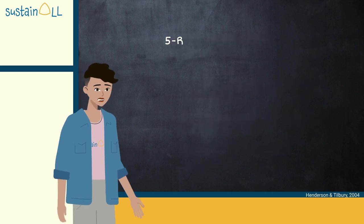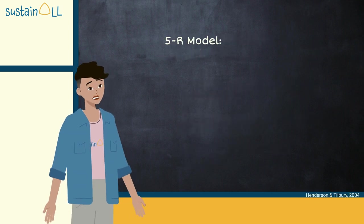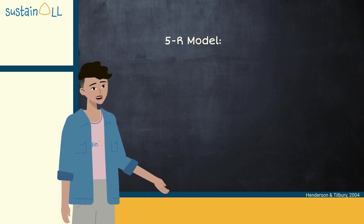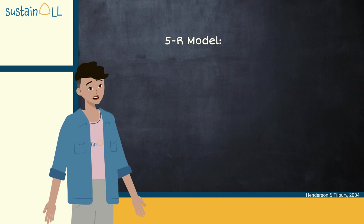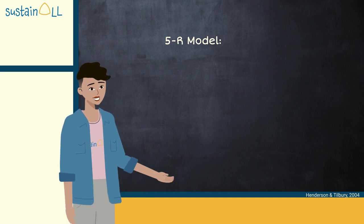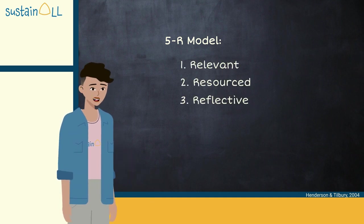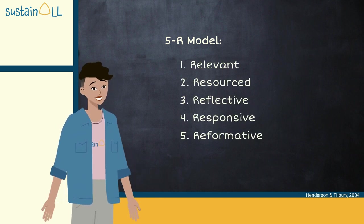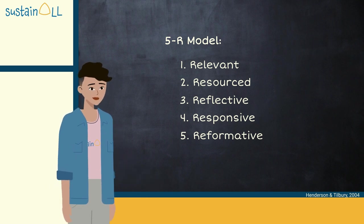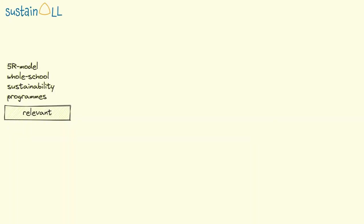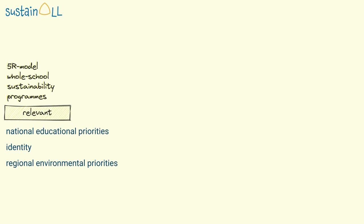The second model is the 5R model for whole school sustainability programs. It shows that effective whole school enriches share five aspects. They are relevant, resourced, reflective, responsive and reformative. In practice, relevant means relevant to the school's mission, to national educational priorities, the community identity as well as environmental priorities of the region.